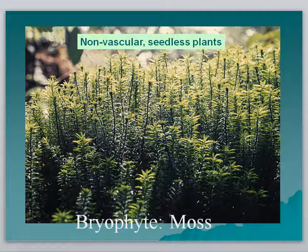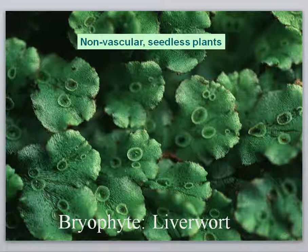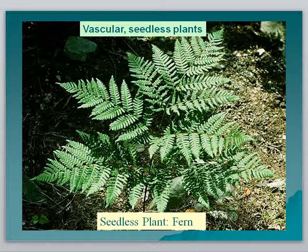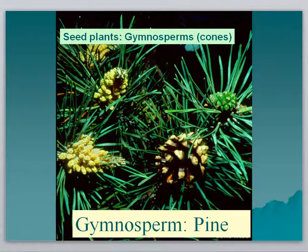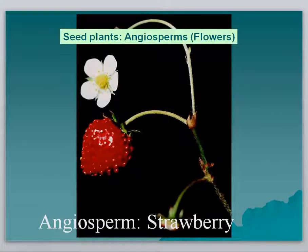Here's an example of a non-vascular seedless plant: a moss. You probably haven't seen one of these before, but it's also a non-vascular seedless plant — a liverwort. They grow very tiny and flat on the forest floor. Next category: a vascular plant that has vascular tissue but is still seedless — this is a fern. Tree ferns can grow up to 30 or 40 feet tall if they're old enough. Moving to plants that do produce seeds — gymnosperms produce their seeds in cones. These are female cones on the right and male cones on the left. And the last group — seed plants with a vascular system that produce seeds in flowers, like a strawberry plant.